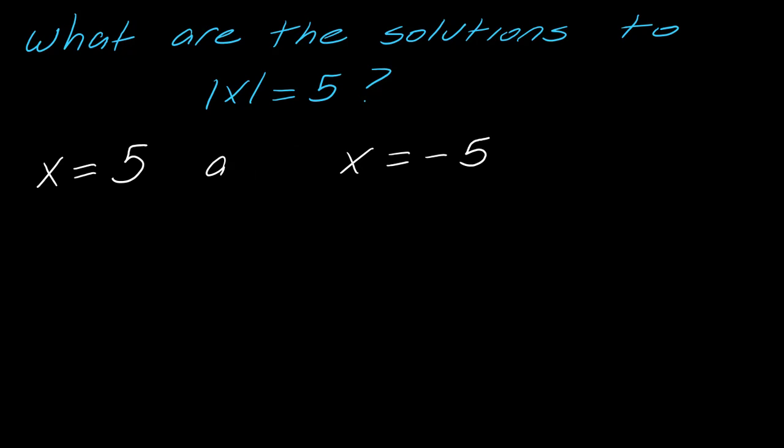So those are the two solutions, although the way we think about it in math is we think about this solution or this solution. So we usually use an or when we give our solution sets. These would be the two solutions here. And if you're wondering why, so just the way the absolute value works. If I take the absolute value of 5, that's 5. And if I take the absolute value of negative 5, that's going to be positive 5.